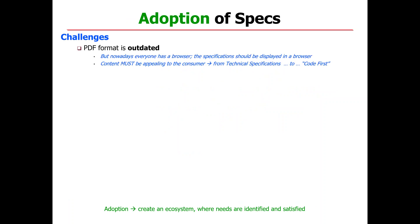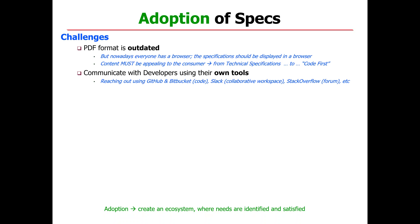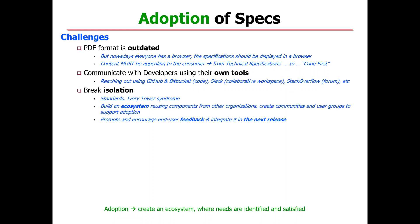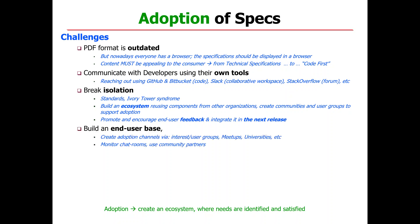In terms of adoption of specifications, the challenge is that the PDF format is outdated. If developers want to see technical descriptions online, you need to communicate with them on their own tools. If you want to get feedback from them, you need to start using GitHub, Bitbucket, Slack, and Stack Overflow — at least to pay attention to what they say. As a standards development organization, we have to break this ivory tower syndrome. We need to build the ecosystem and transcend — this goes beyond just us. We have to reach out to the community and promote that impact.